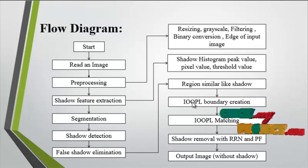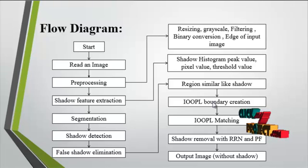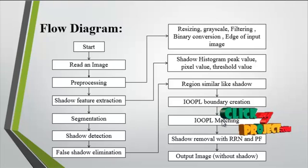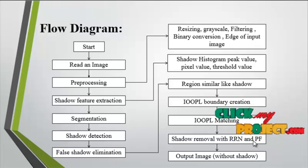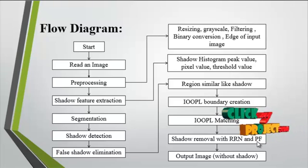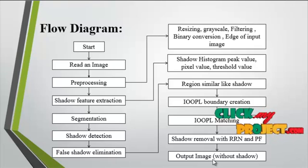Then IOPL boundary extraction is undertaken after false shadow elimination, extracting the inner and outer layer of the image. Then IOPL matching is performed on the extracted boundaries. Shadow removal is done using RRN and PF — Relative Radiometric Normalization and Polynomial Fitting. The output image from RRN and PF is the final shadow-free image.